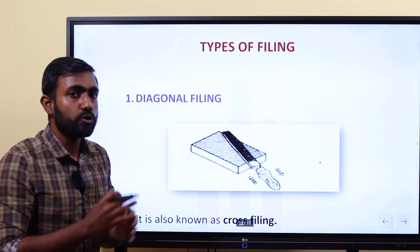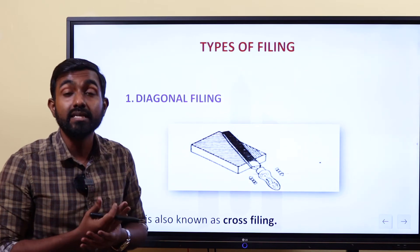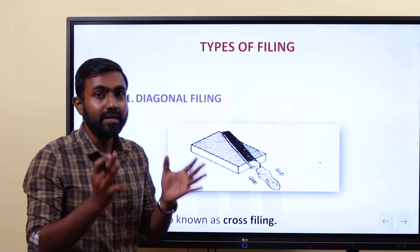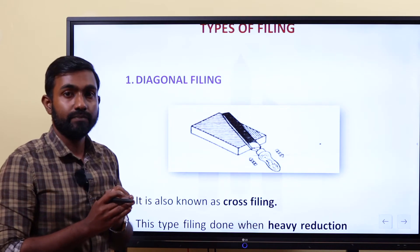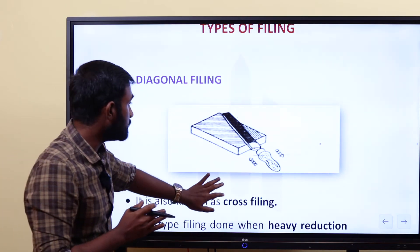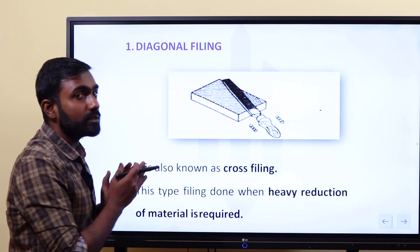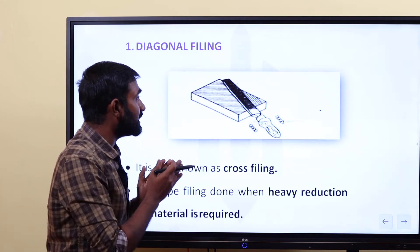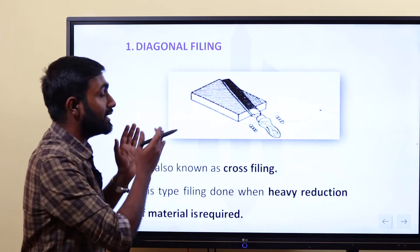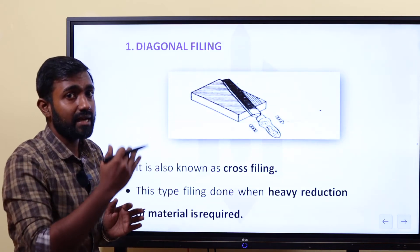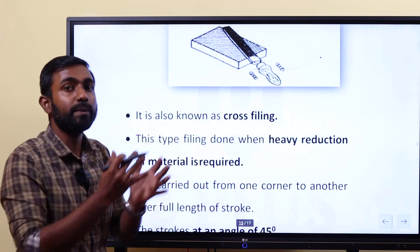Our last topic is the type of filing. When we do the filing process, there are types of filing. One is diagonal filing. We have a work piece and the file is set at diagonal light — around 45 degrees. When we need to do diagonal filing, we use 45 degrees. It is also known as cross filing.